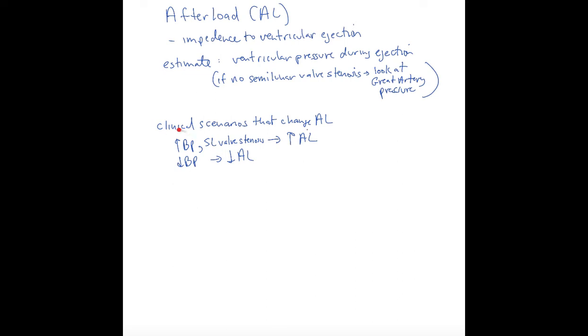Clinical scenarios that change the afterload - if the blood pressure changes, that certainly is going to affect the impedance to ejection. High blood pressure and semilunar valve stenosis cause a very high ventricular pressure during ejection, high afterload. Low blood pressure would cause a decrease in afterload.